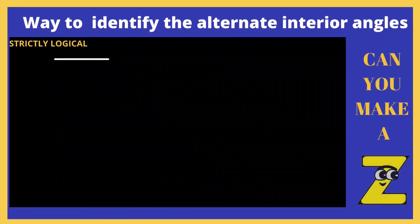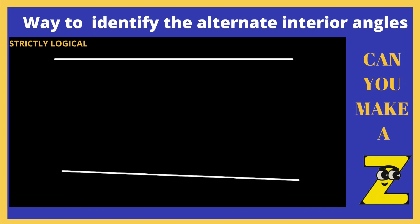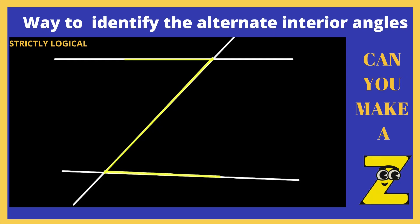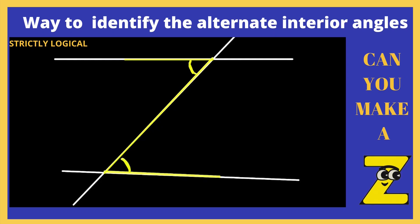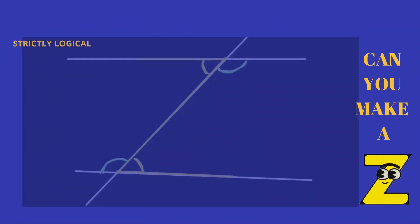Now the question is, how can we identify alternate interior angles? I have a very simple way — can you make a Z? Some people find it helpful to use the Z test for alternate interior angles. If you can draw a Z or a backward Z, then the alternate interior angles are the ones that are in the corners of the Z.